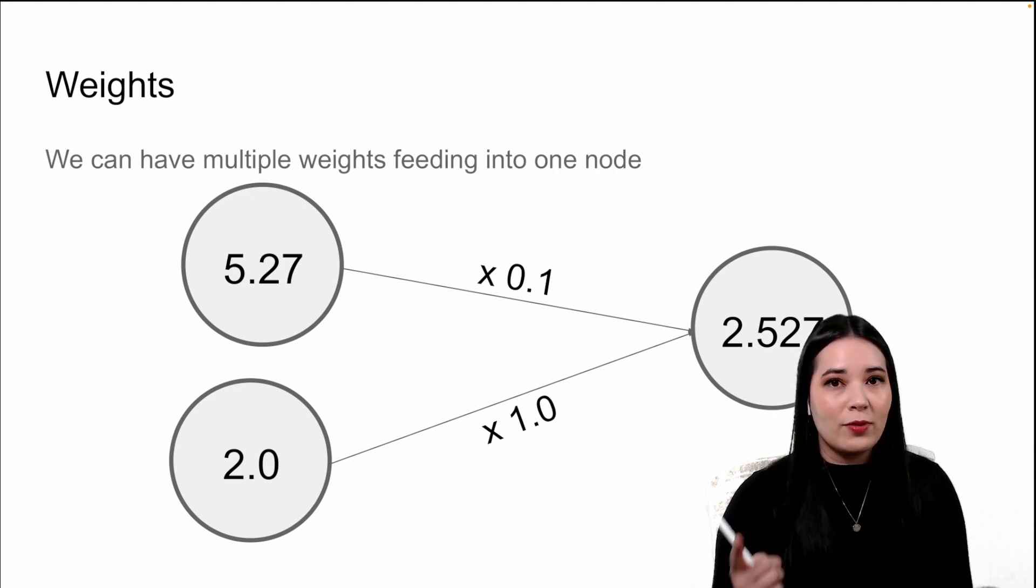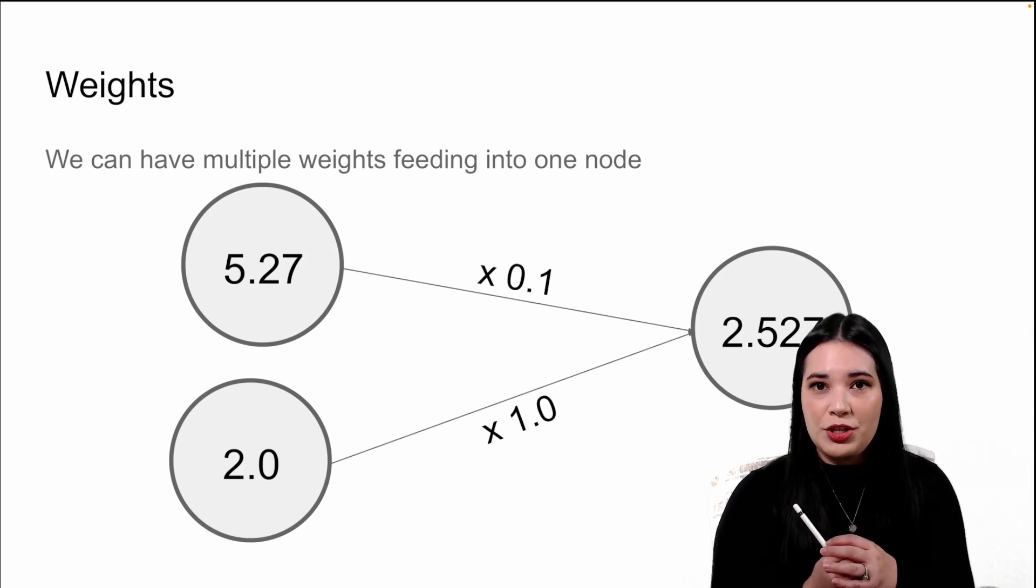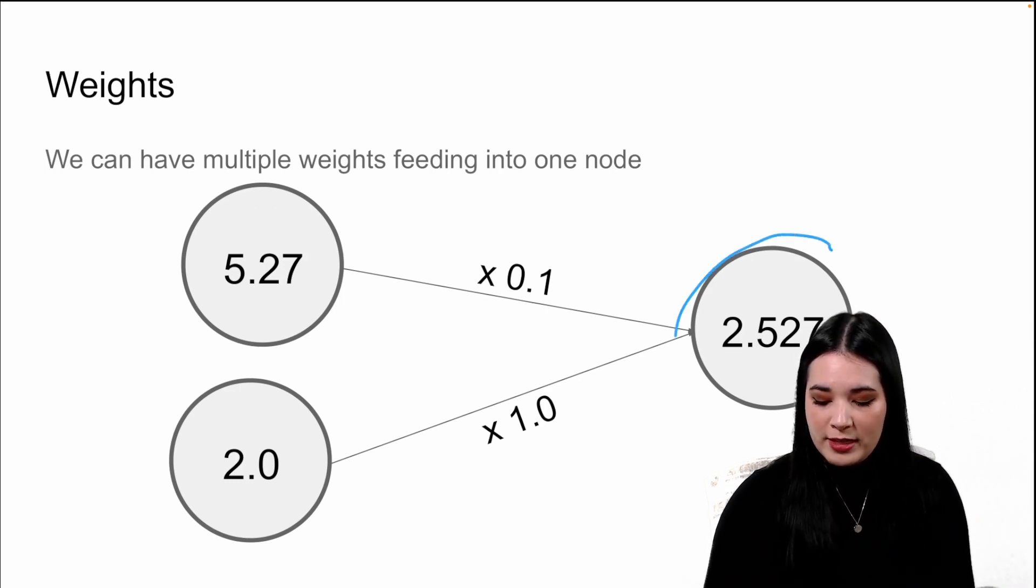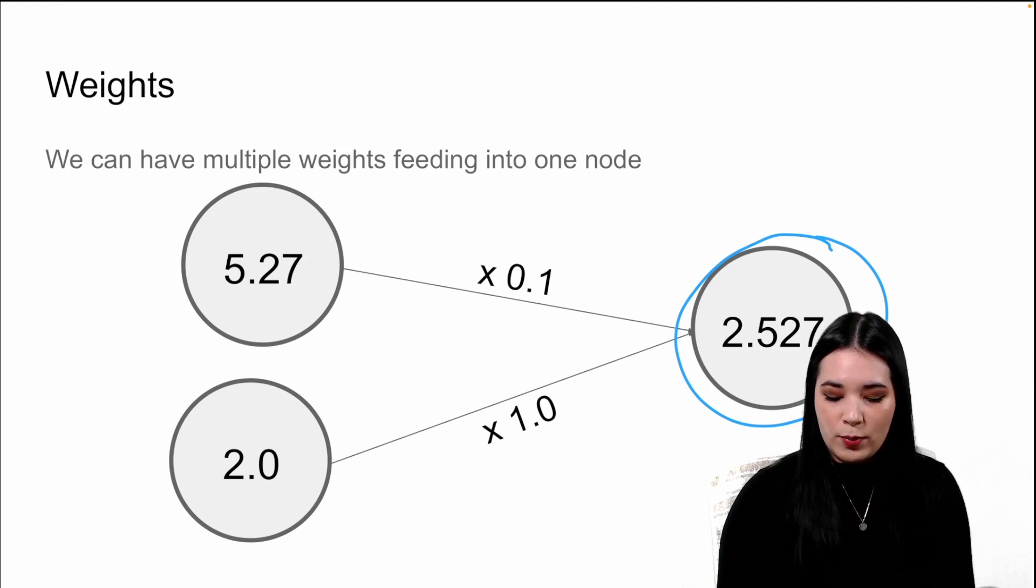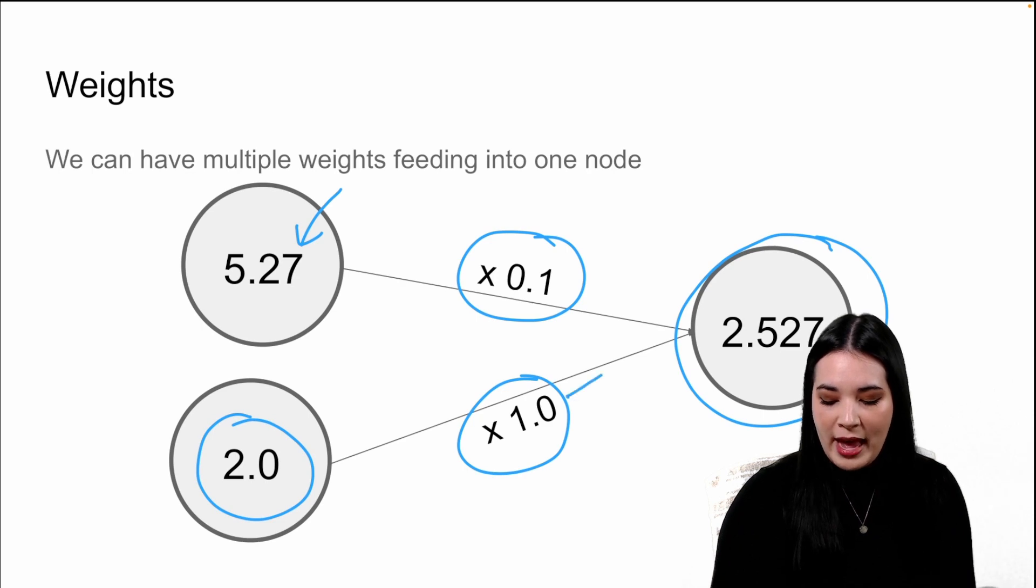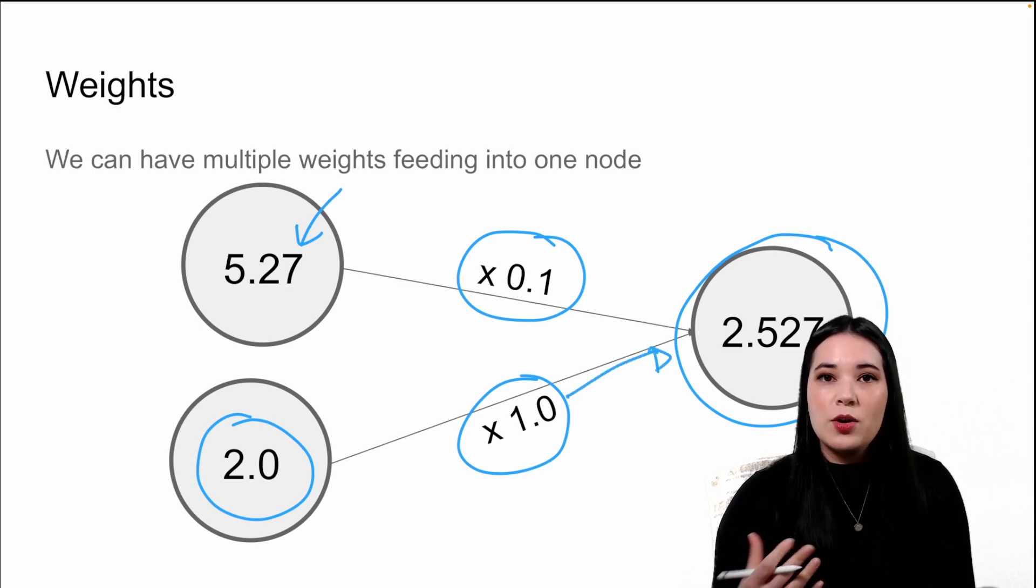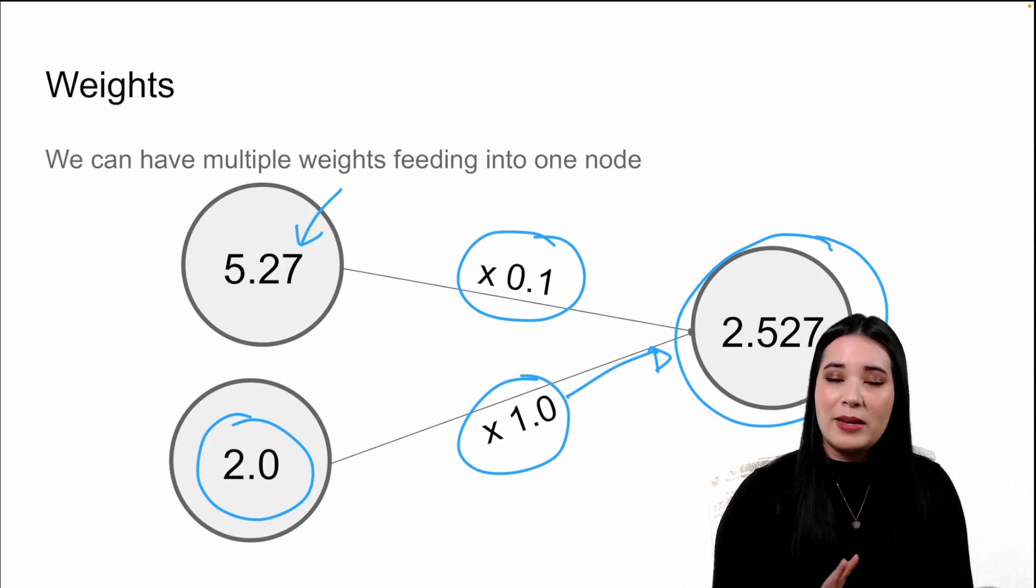But nodes don't have to have just one input. For instance, here on the right-hand side, our node actually has two inputs coming into it. To get the value of this node on the right-hand side, we take this value, 5.27, multiply it by its weight, and then we take this value, 2.0, multiply it by its weight, and add it to that node. So this node has two sources of information.